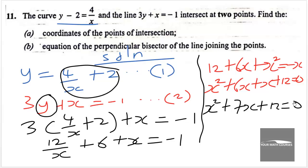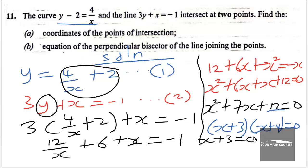We need two factors of 12 that add up to 7, which are 4 and 3. Since the coefficient of x squared is 1, we can write the factored form directly as (x plus 3)(x plus 4) equals 0. Therefore x plus 3 equals 0 or x plus 4 equals 0, giving x equals negative 3 or x equals negative 4.